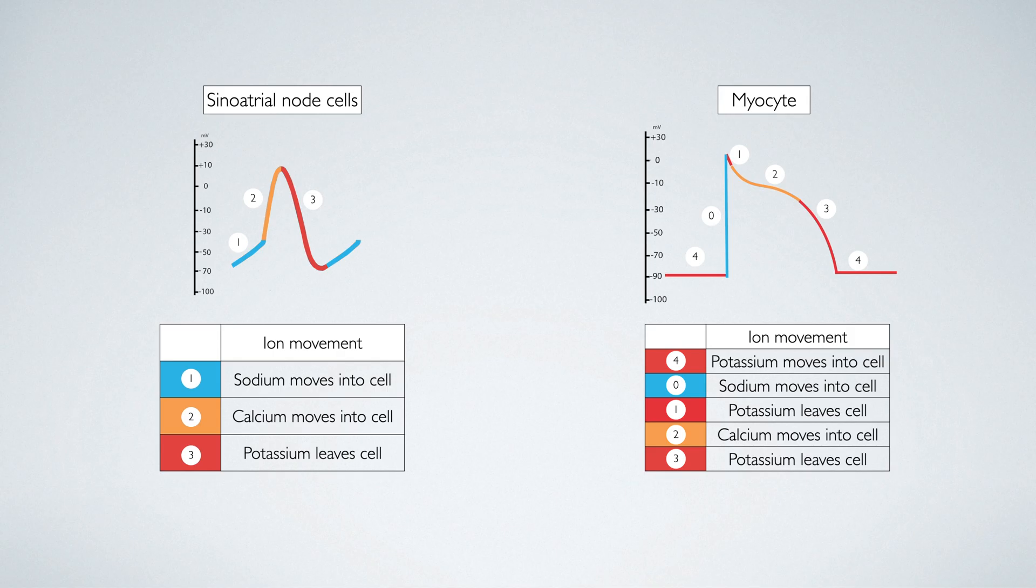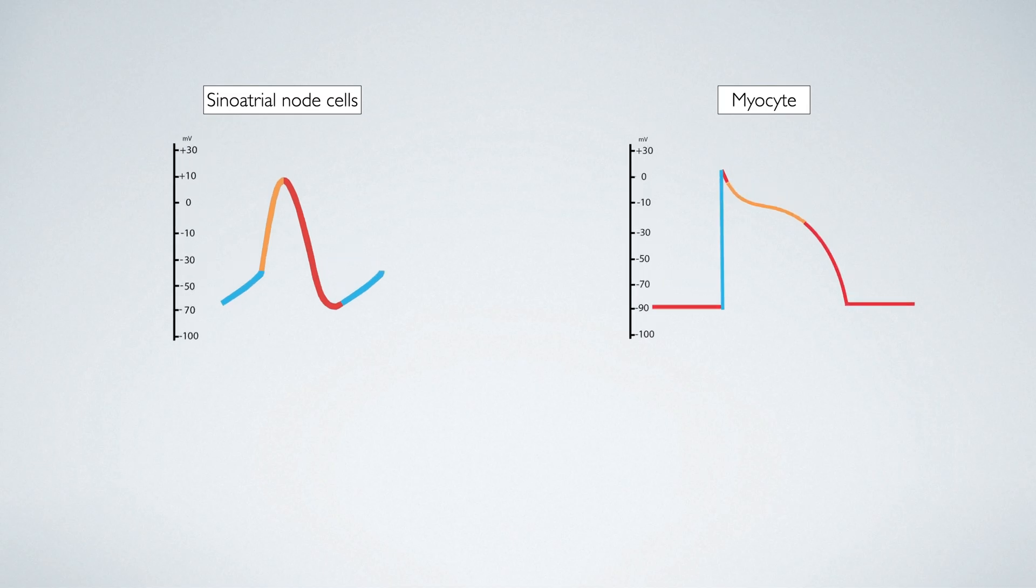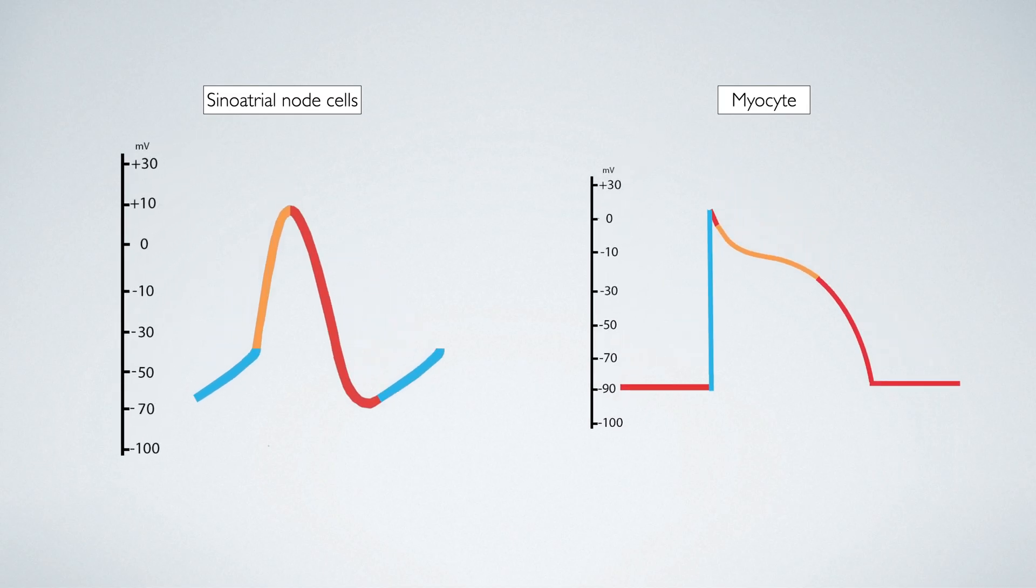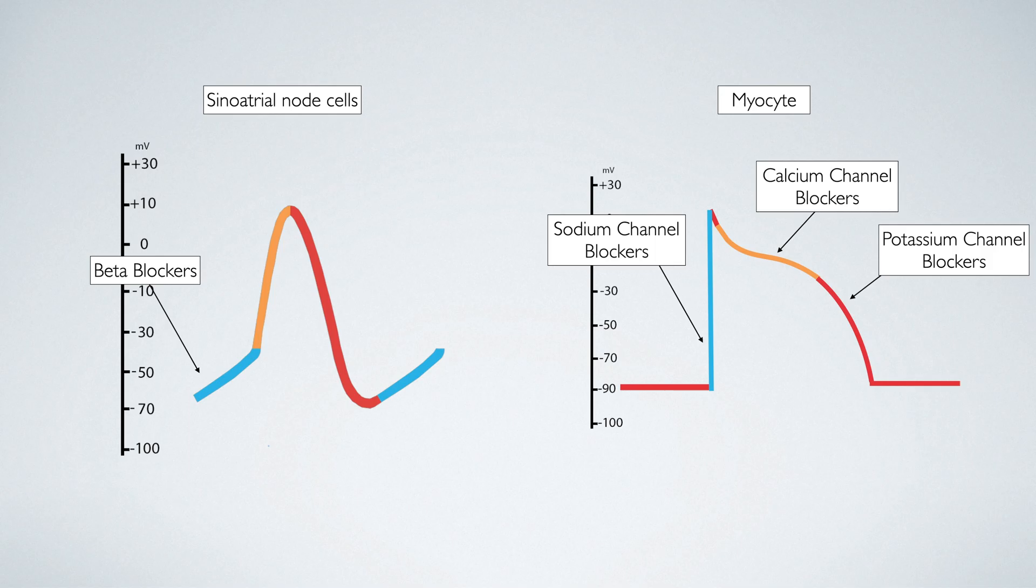This image demonstrates when sodium, calcium and potassium ions either enter or leave the cells. Note that there are differences between the pacemaker potential and the myocyte action potential. This is clinically relevant because certain cardiac drugs will act on ion channels to decrease the heart rate or prolong portions of the action potentials.